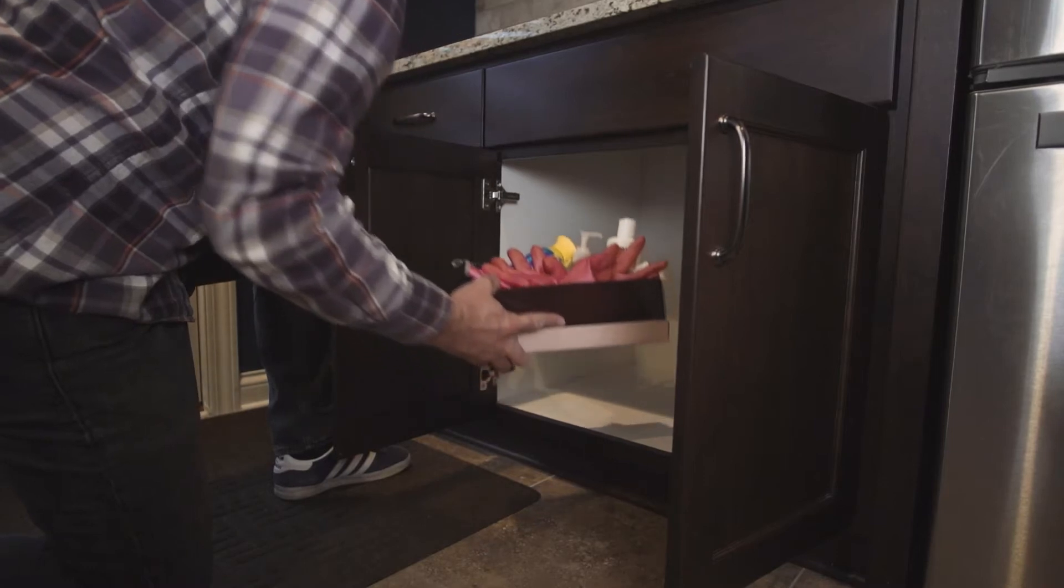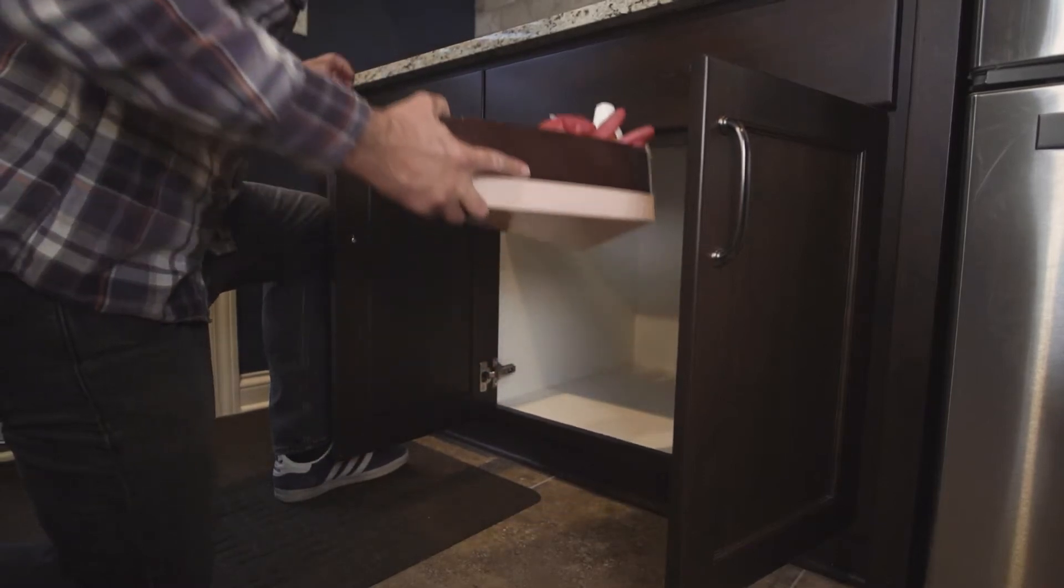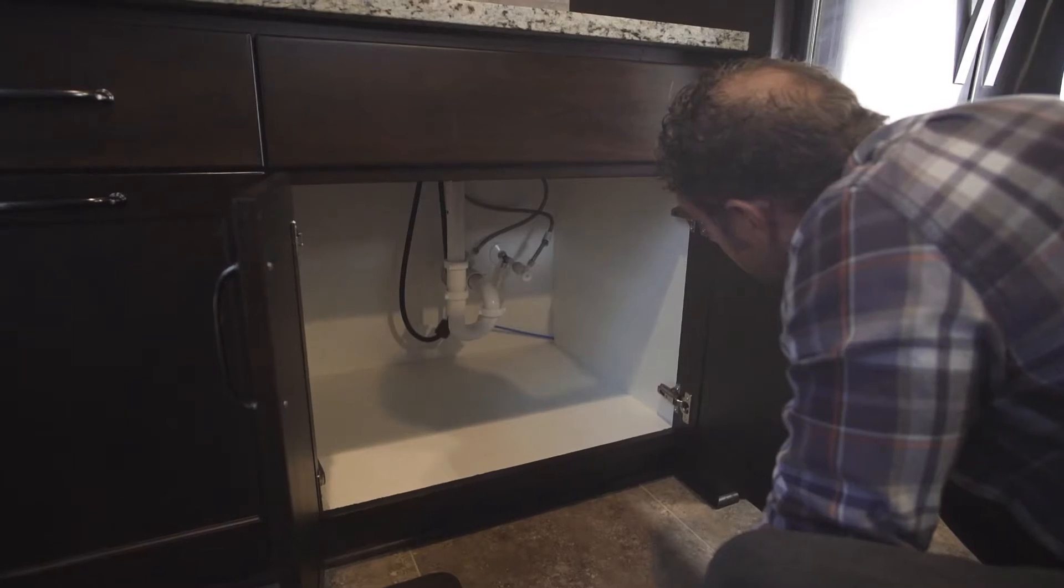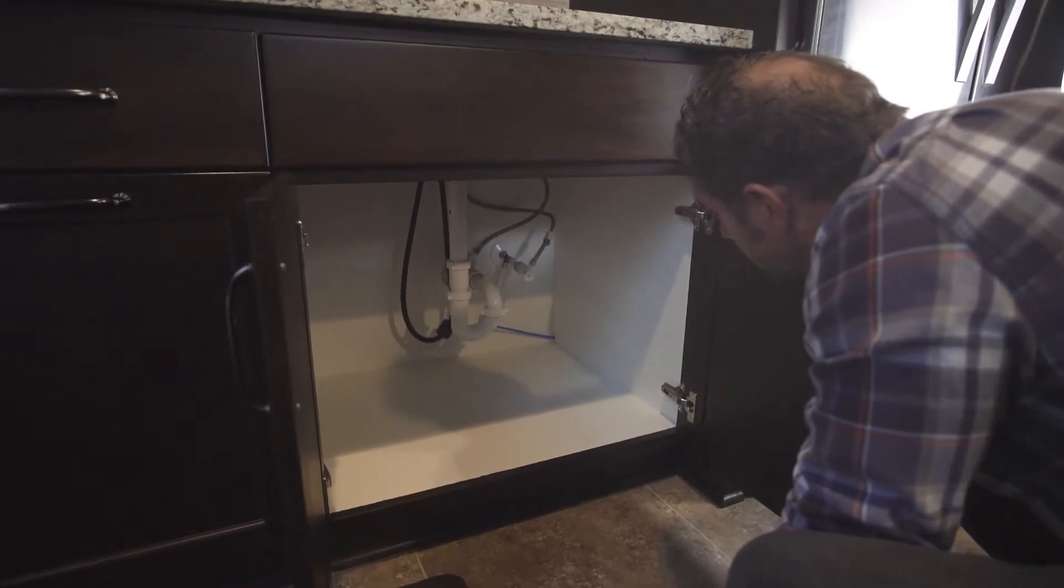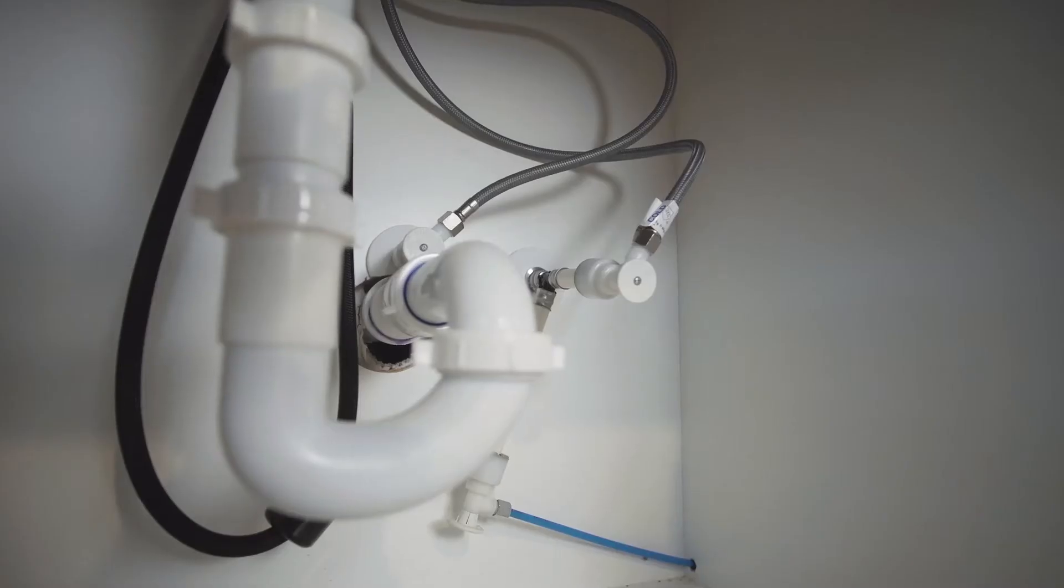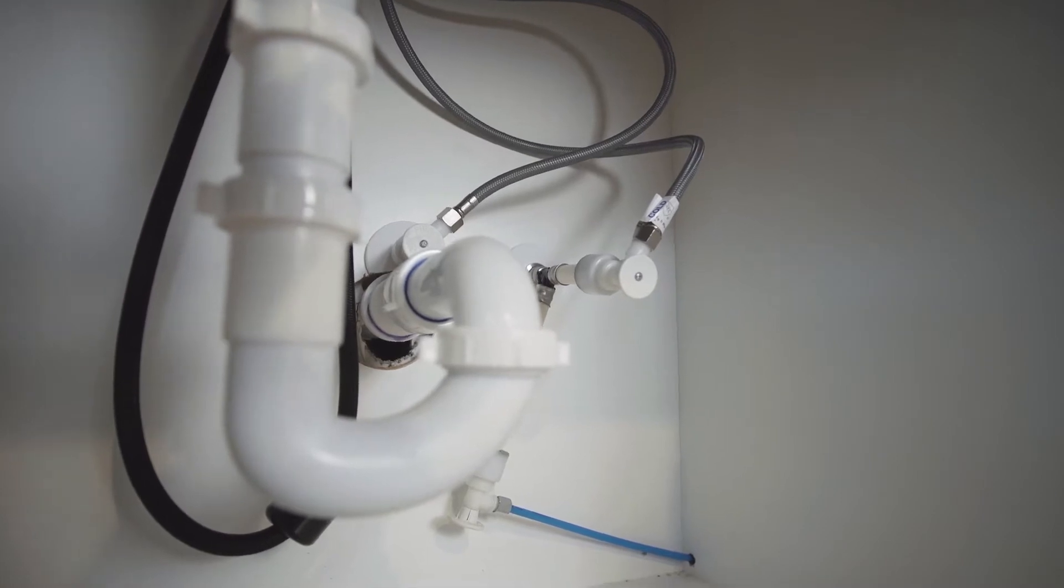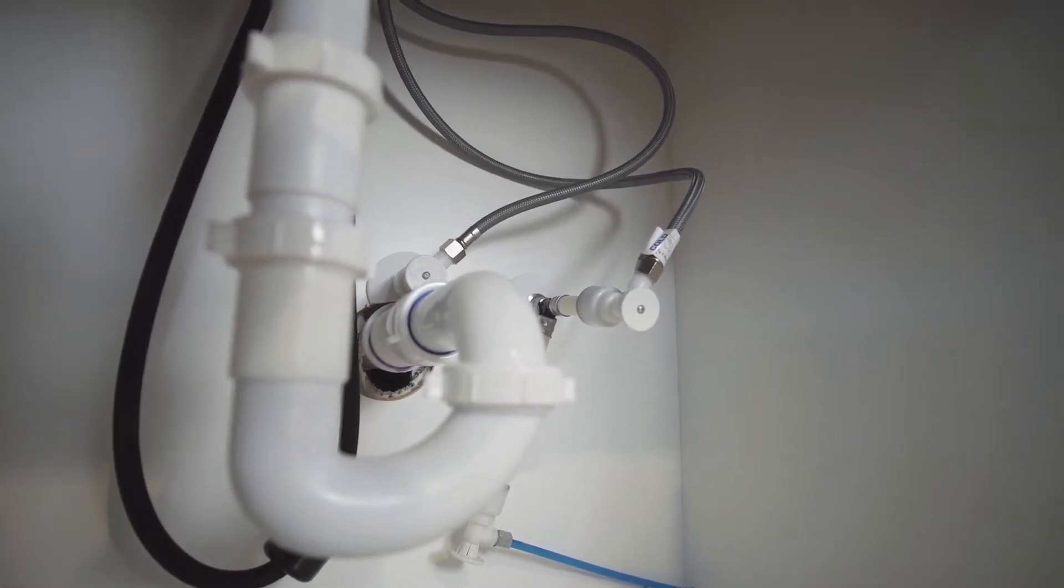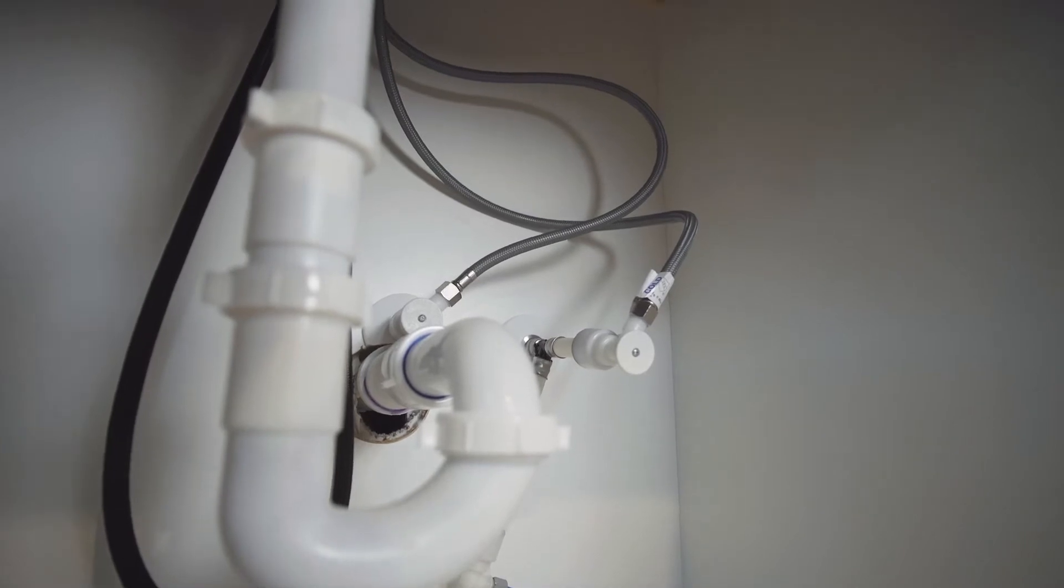Next, you'll need to clear out the necessary space under your sink to make room for the RO installation. Take a good look at the water supply lines, the sink drain pipe, and how they're connected. Your RO system will need to be connected to these connection points, so it's important that you know where they are. It also impacts where you place the system.